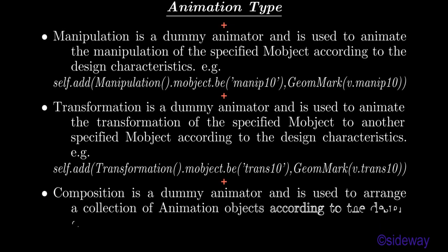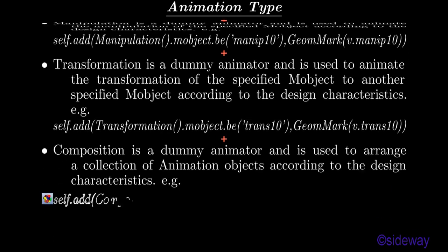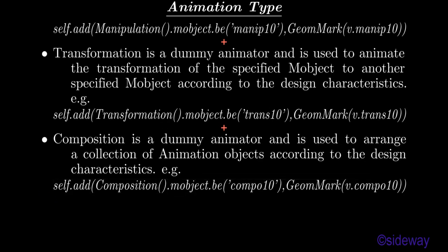Composition is a dummy animator used to arrange a collection of animation objects according to the design characteristics. For example: self.add(Composition.mobj.b.const10, geometry_mark.b.comp10).